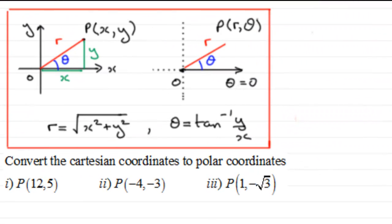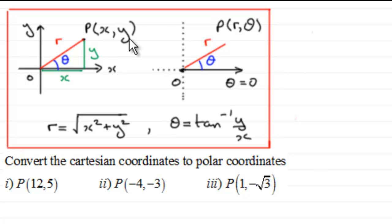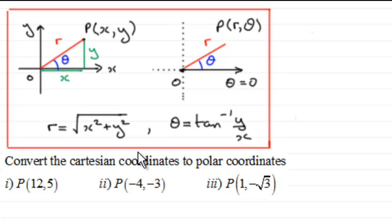This is a follow-up exercise to my previous video where I showed how we can define a point in polar coordinates given its Cartesian coordinates. If we have Cartesian coordinates for point P(x, y), we can convert to polar coordinates r and theta, knowing that r equals the square root of x² plus y², and that theta equals the inverse tan of y over x.